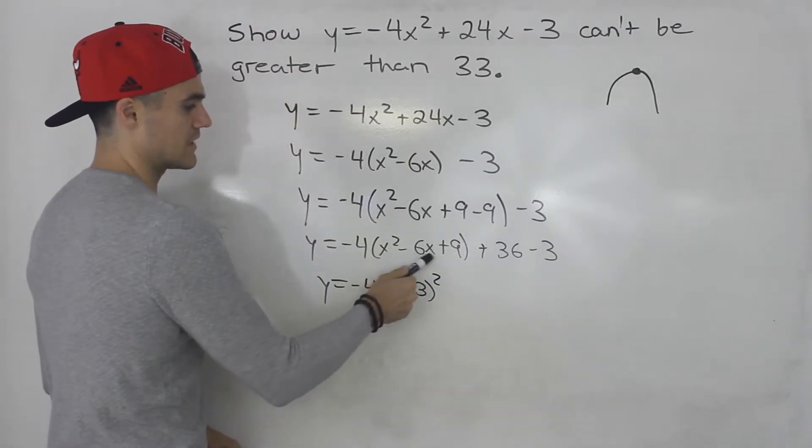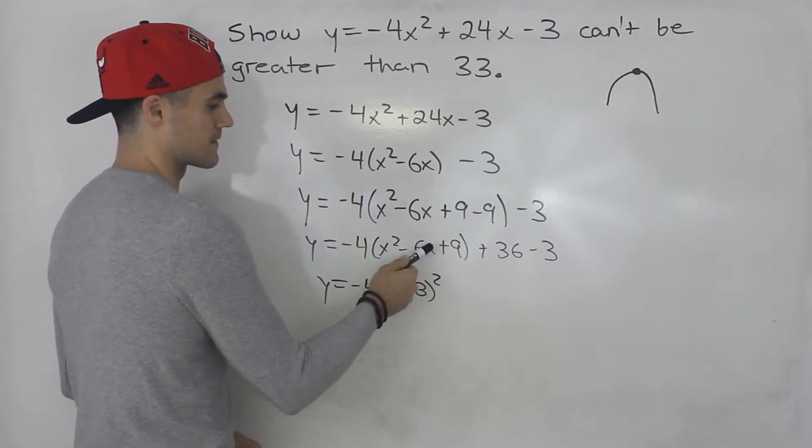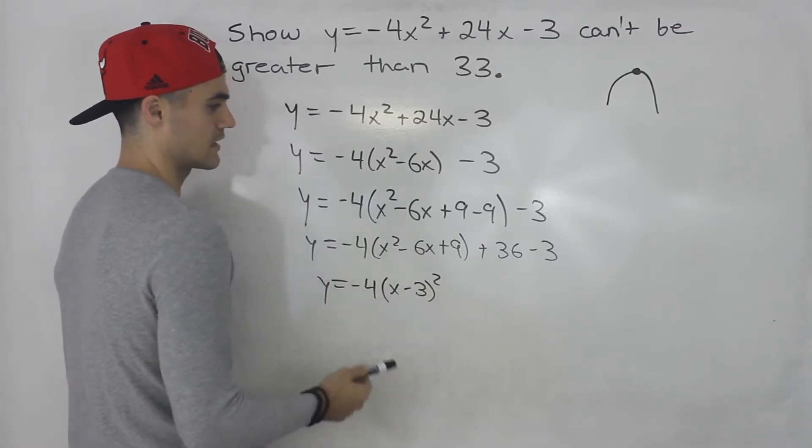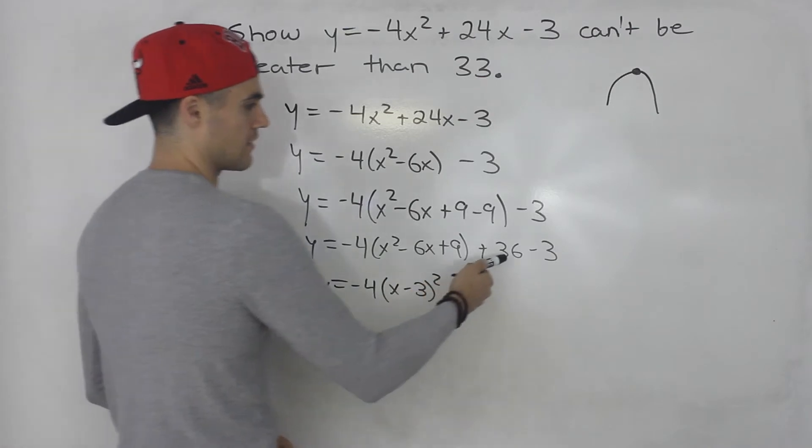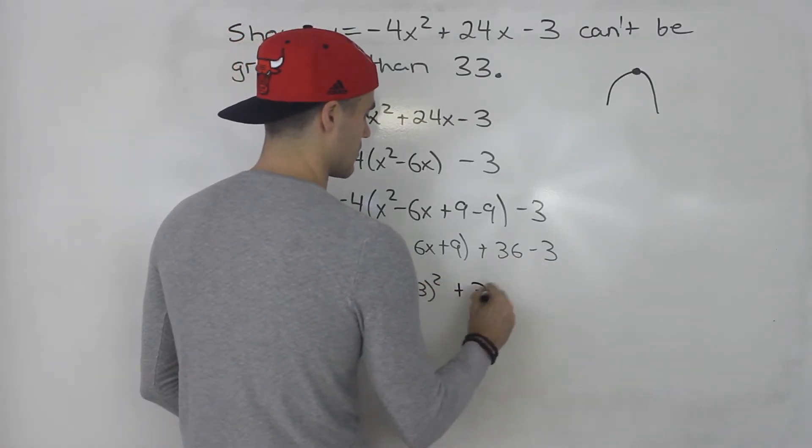This is always going to be half of this, so -6 divided by 2 is -3. And then 36 minus 3 gives us 33.